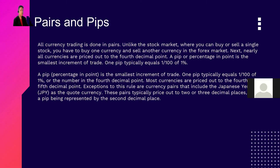All currency trading is done in pairs. Unlike the stock market where you can buy or sell a single stock, you have to buy one currency and sell another in the foreign exchange market. Nearly all currencies are priced out to the fourth decimal point. A pip, or percentage in point, is the smallest increment of trade — one pip typically equals 1/100 of 1%.